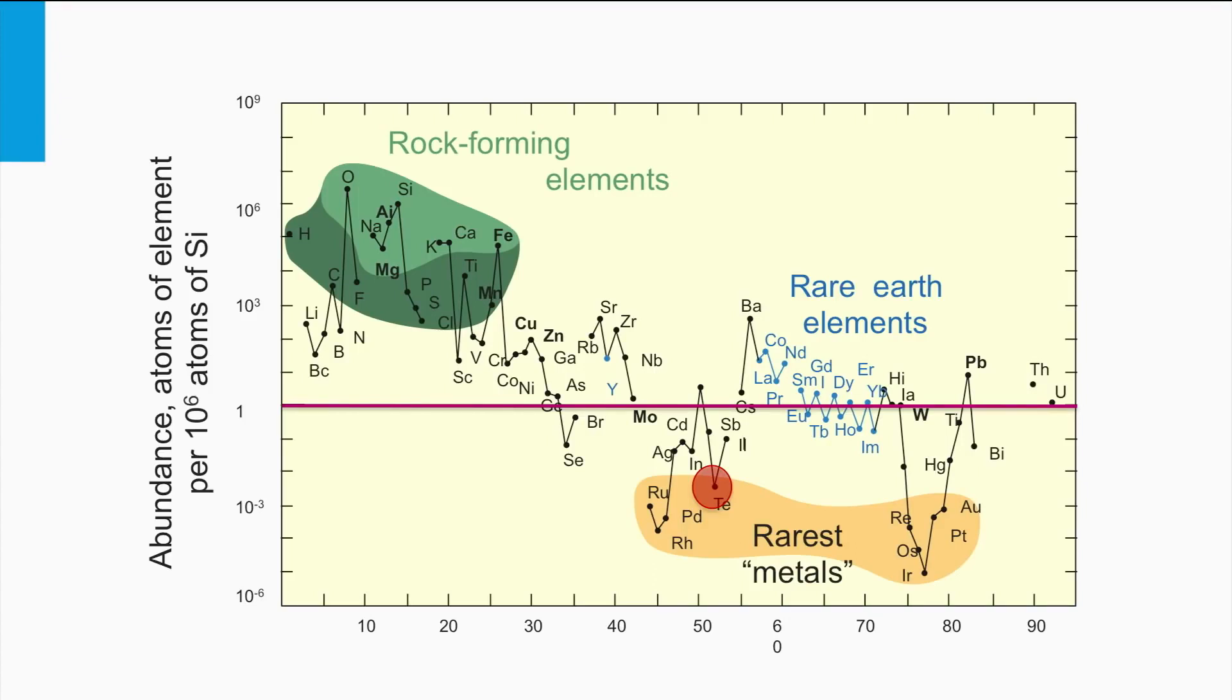Here we see again the illustration that shows the abundance of the various elements in the earth's crust. As you can see, tellurium is not a very abundant element, so tellurium supply might be the limiting step to upscale the cadmium telluride PV technology to future terawatt scales.